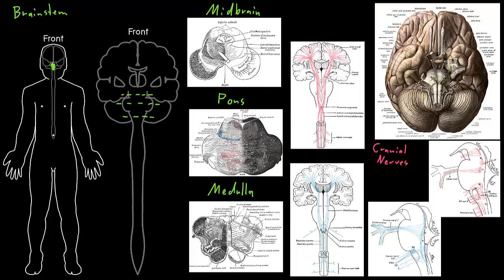Much of the brainstem gray matter consists of distributed neurons that aren't in nice discrete little places or bundles. We call this the reticular formation of the brainstem — just all these neuron somas scattered about through a lot of the gray matter inside the brainstem.